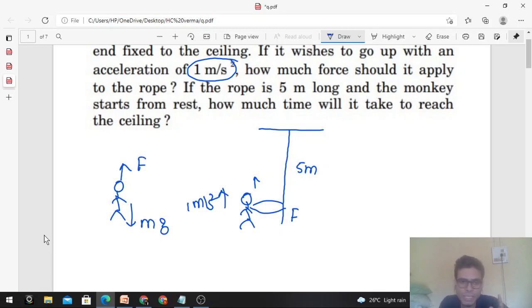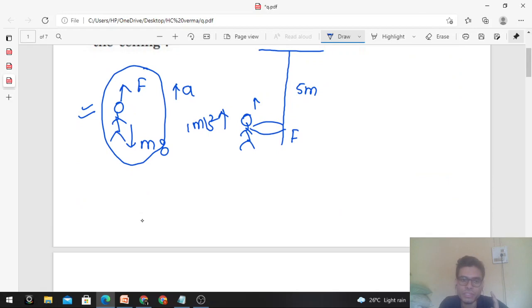Now, this acceleration is 1 m/s² in the upward direction. This is the free body diagram of the monkey. So F - mg = ma, which gives us F = m(g + a). This is the value of force.